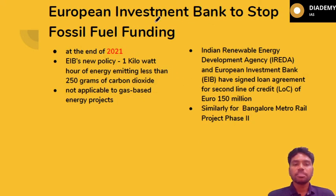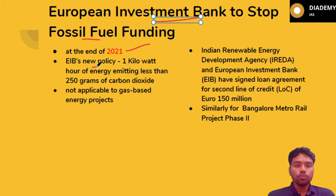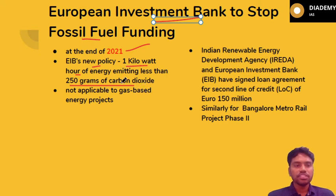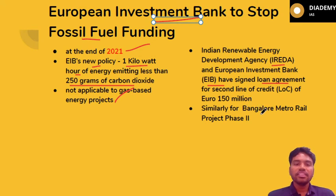The next topic is the European Investment Bank, which is a regional bank similar to the New Development Bank for BRICS. It has taken the initiative to stop fossil fuel funding, setting 2021 as the final year. Under its new policy, it will only promote projects that produce not more than 250 grams of CO2 per kilowatt-hour of energy production, though this is not applicable for gas-based energy projects. Recently, the Indian Renewable Energy Development Agency signed a loan agreement with the EIB for renewable energy projects in India, and the EIB is also funding the Bangalore Metro project Phase 2.